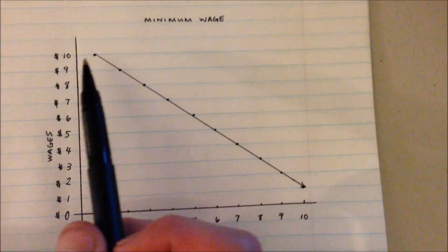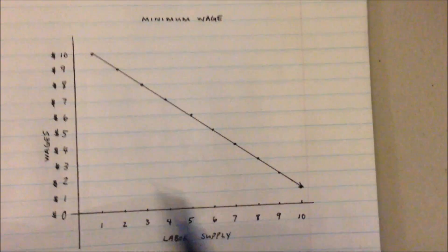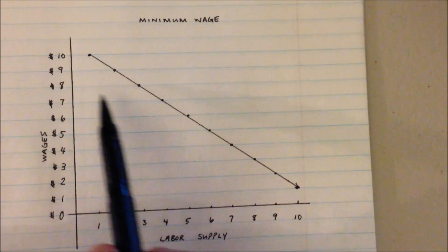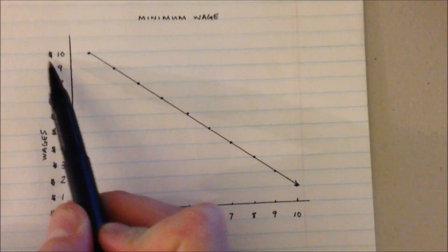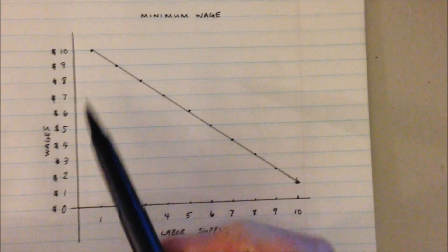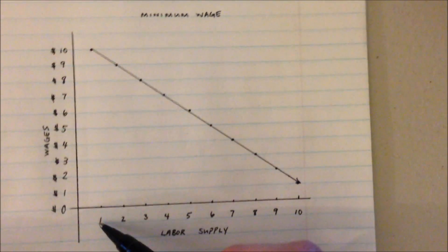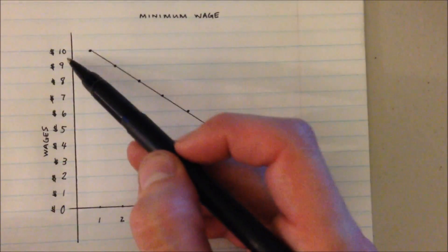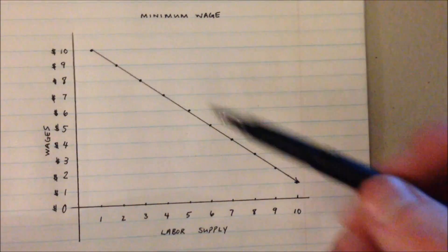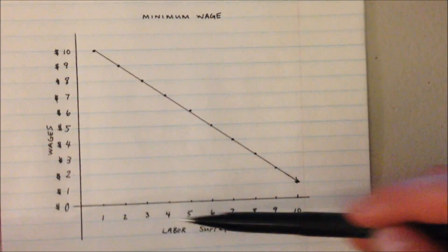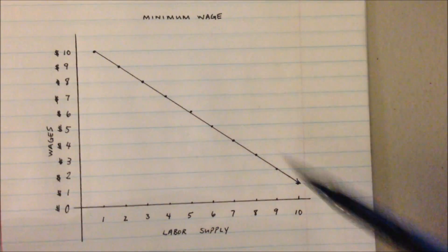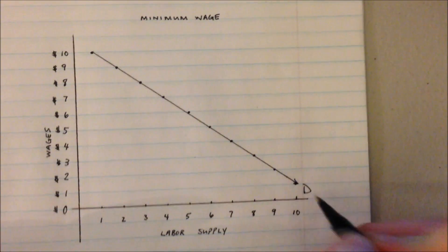The first thing that we've done for our model is we've drawn some points down here and this is going to be our demand for labor line. So when wages are set at $10 there will be a demand for one worker in the marketplace, and then for every $1 decrease in the wage we will have an increase of 1 in the labor supply. And so this will be our demand line for labor.